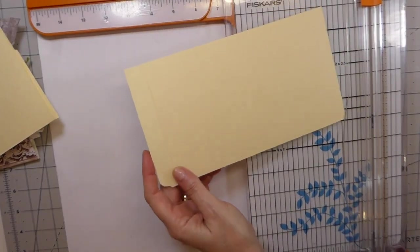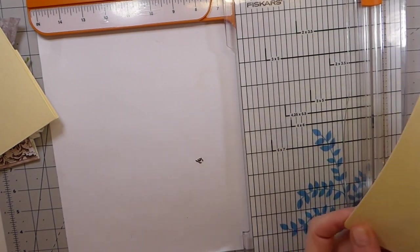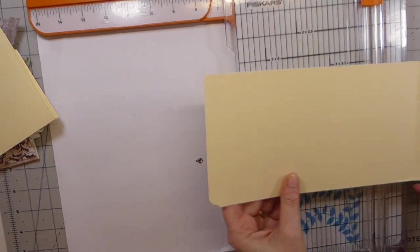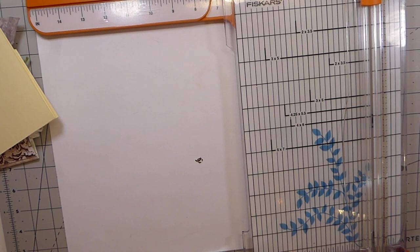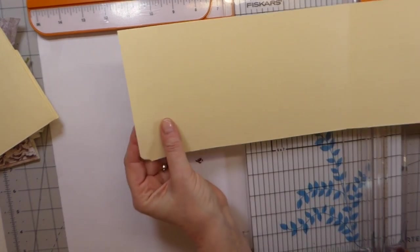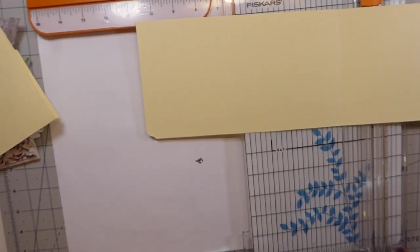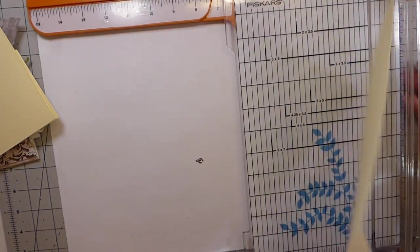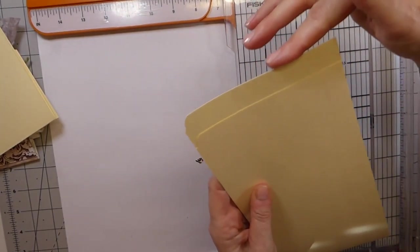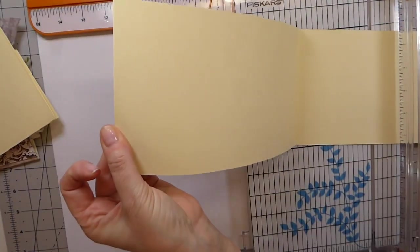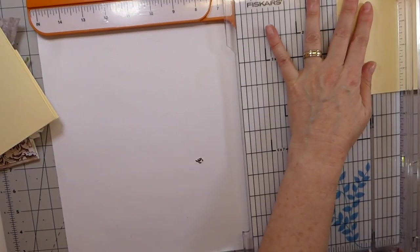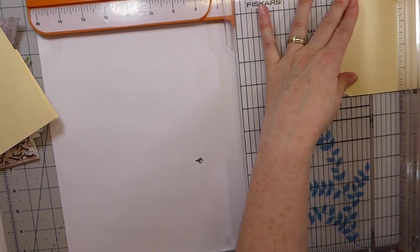And so this is the other piece that we cut and we are going to score this. Okay, so starting—you've got the longer portion of the file folder.